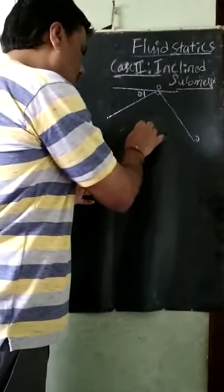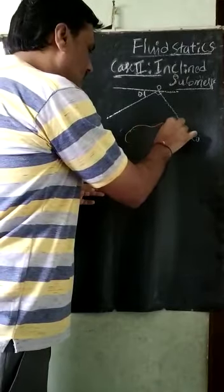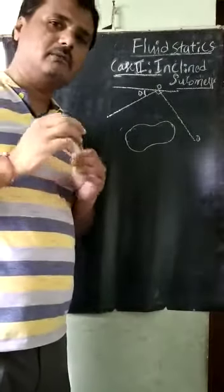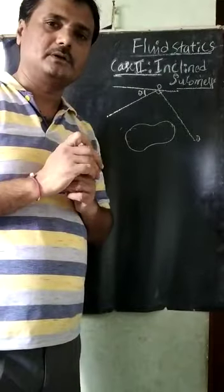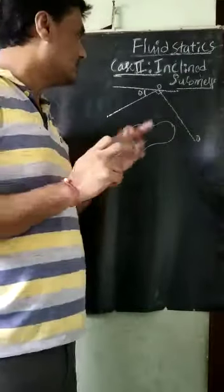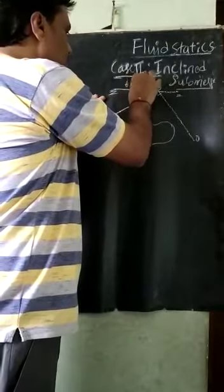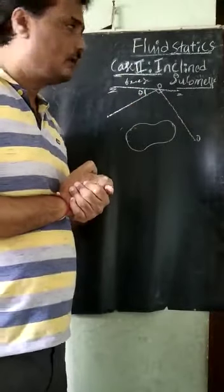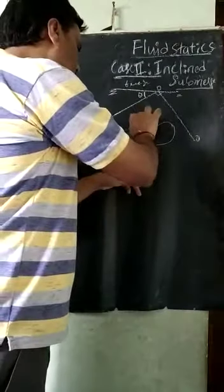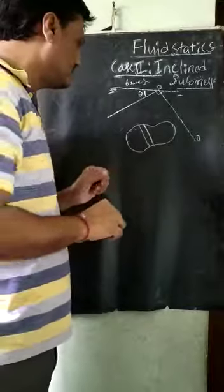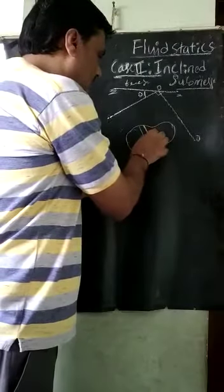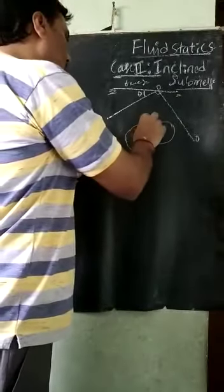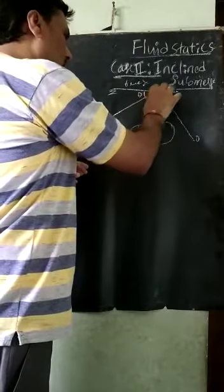Now, this is the arbitrary free surface. We are mentioning the distances h, h-bar, and h* with respect to the free surface, and also with respect to the OO axis. I will take a small strip, as we have done in the case of the vertically submerged plane. This strip has width b and height dh.